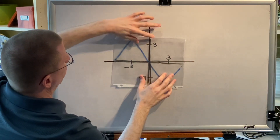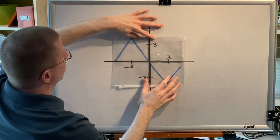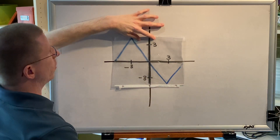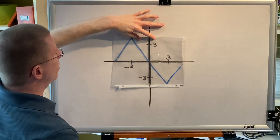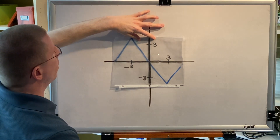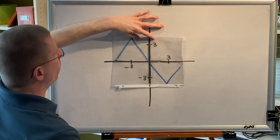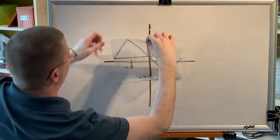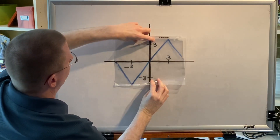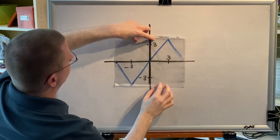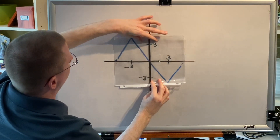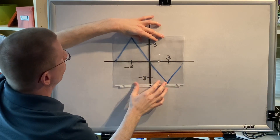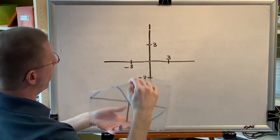If your graph looks the same before and after the spin, then that type of symmetry is present. In this case, this graph does not have x-axis symmetry because the picture is different before and after. Before: the peak is on the right. After: the peak is on the left.